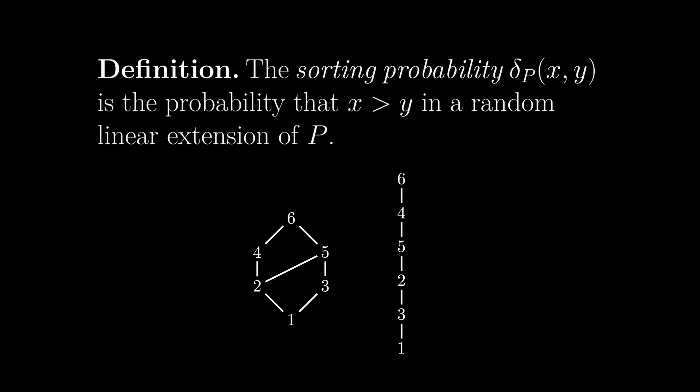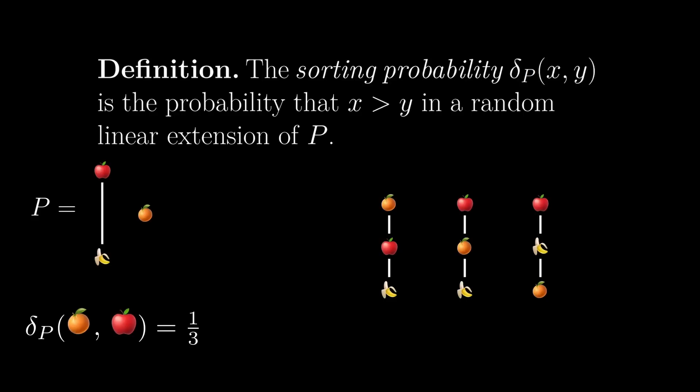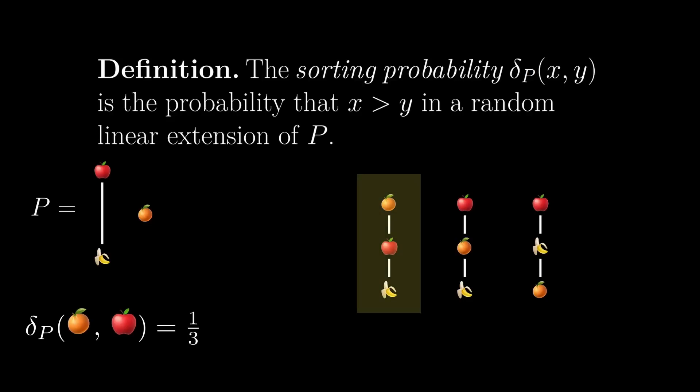The sorting probability of two elements, x and y, in our poset is the probability that we put x over y in a random linear extension of the poset. In our earlier example, the sorting probability of oranges over apples was one-third, because in only one out of the three possible linear extensions did we put oranges over apples.